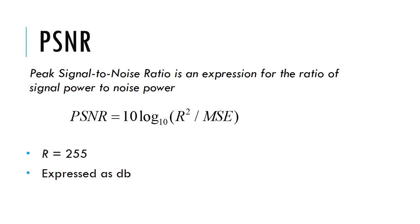PSNR stands for Peak Signal to Noise Ratio, and it is an expression for the ratio of signal power to noise power. It is estimated with the formula: PSNR = 10 × log₁₀(R² / MSE), where R is the signal power and MSE is the noise power.